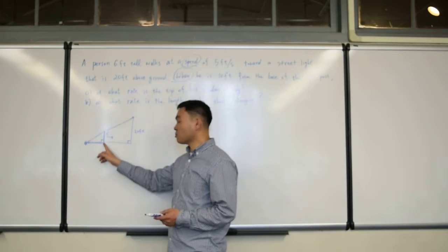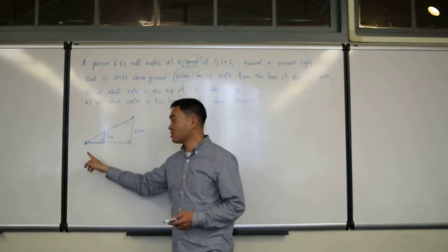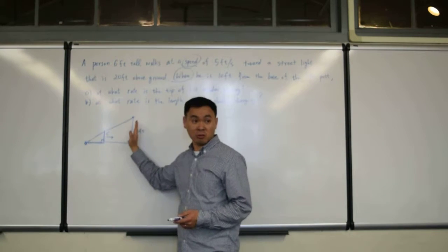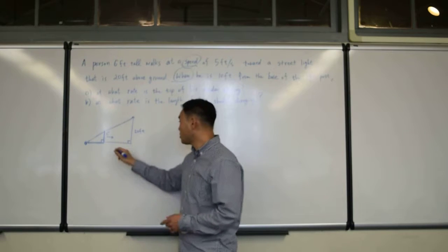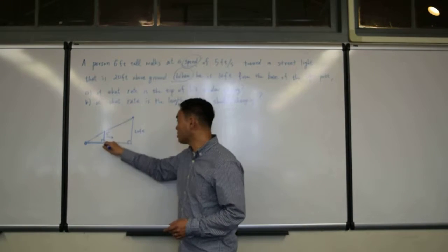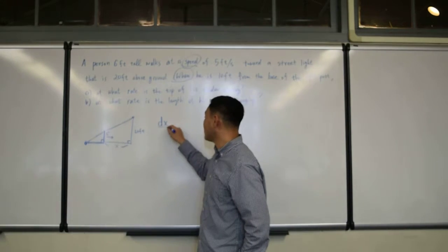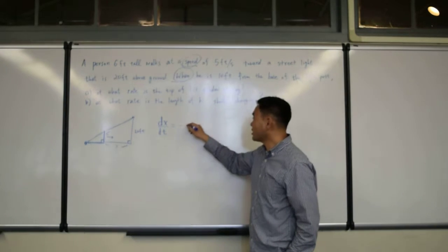You don't want to measure the speed of this person as change of this thing because the tip of the shadow is also moving as it gets closer and closer to that. So you don't want that. You really want to use your x as this one, this length here. And then, only then you can say dx/dt equals to negative 5.